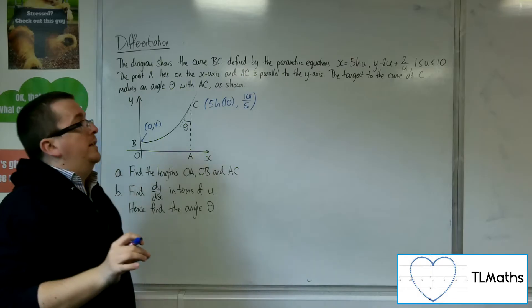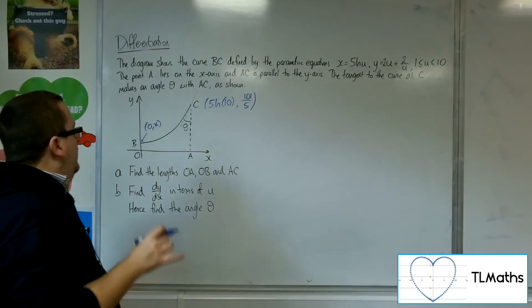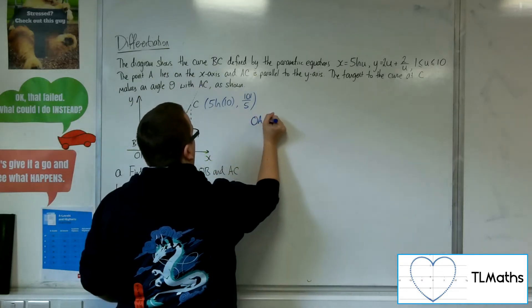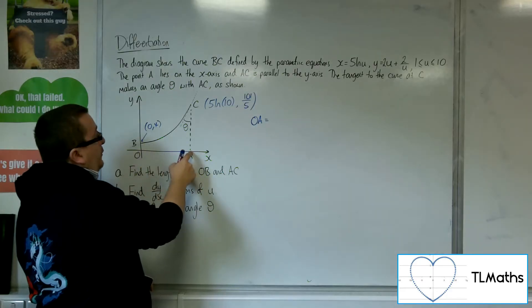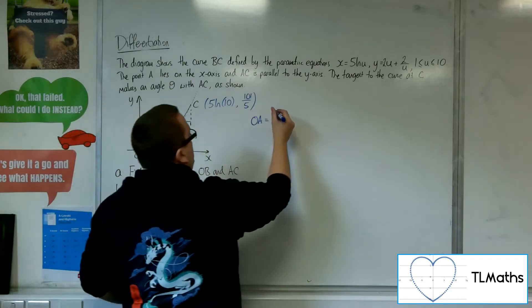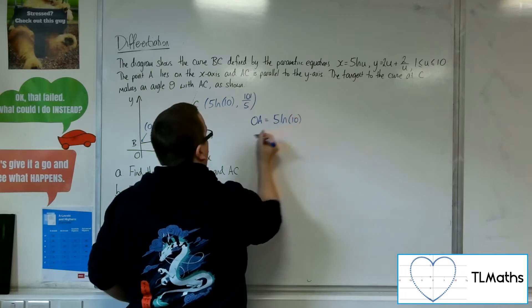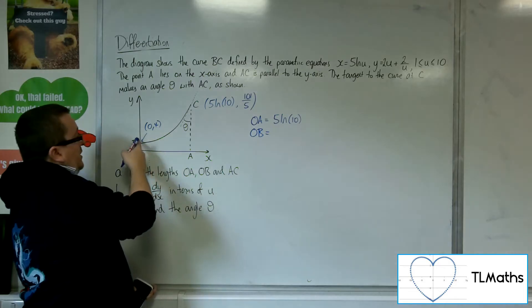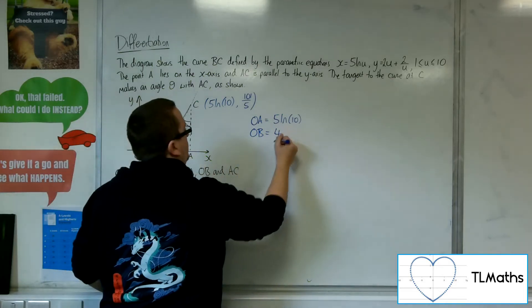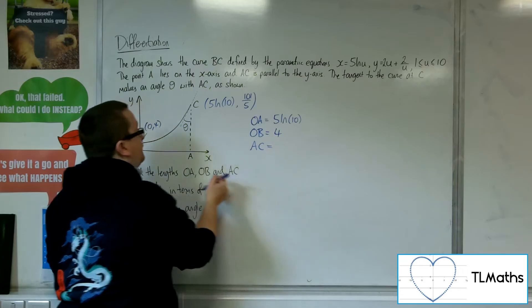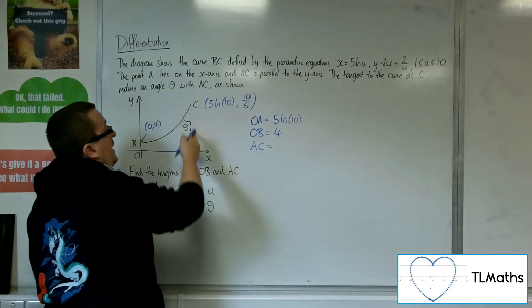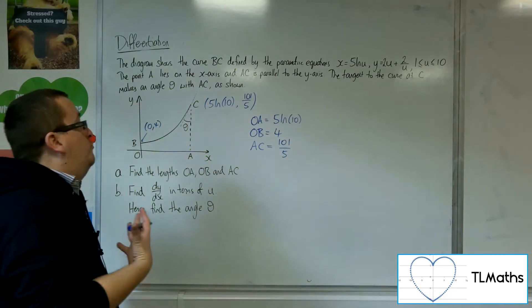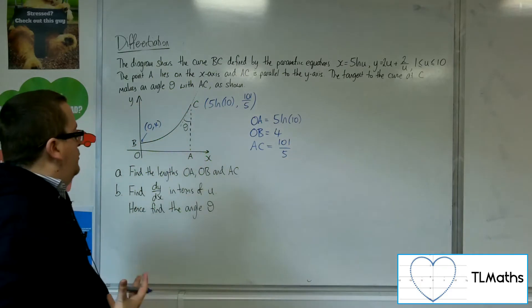So it's really interpreting the equations and the diagram. So that means I can now write down the lengths. OA, so that horizontal distance is 5 log 10. OB is that vertical distance there, which is 4. And AC is that vertical distance there, which is the 101 over 5. So that's really all about interpreting the equations.